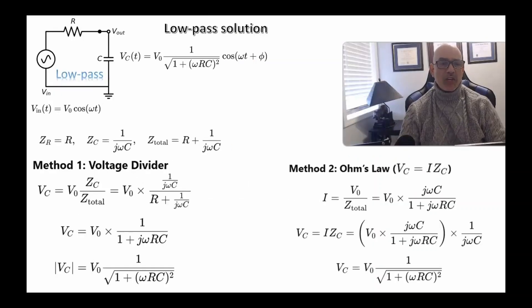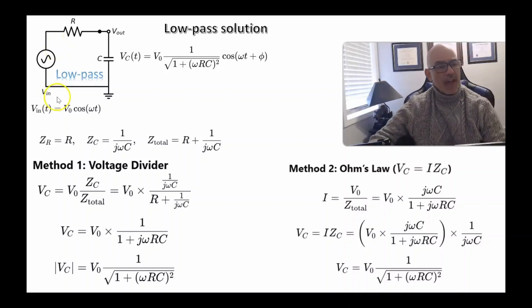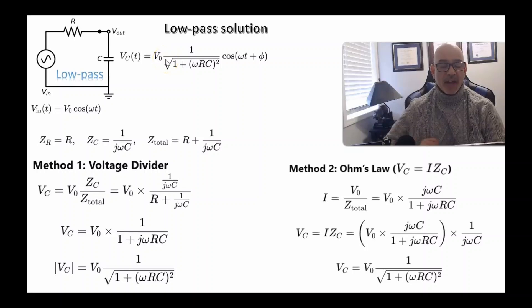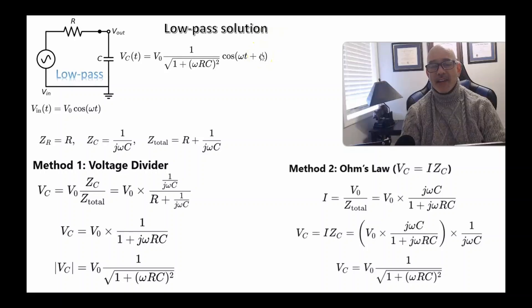Let's start by discussing the solution to the low-pass filter. This is an RC low-pass filter. It has some input voltage from the power supply given by the voltage amplitude times cosine of omega t. The voltage across the capacitor is given by some amplitude times cosine of omega t plus phi, and I'm going to show how we get this amplitude. This phi is the phase angle. I'll show how to calculate it on the next slide, and give an intuitive explanation of what the phase angle is.